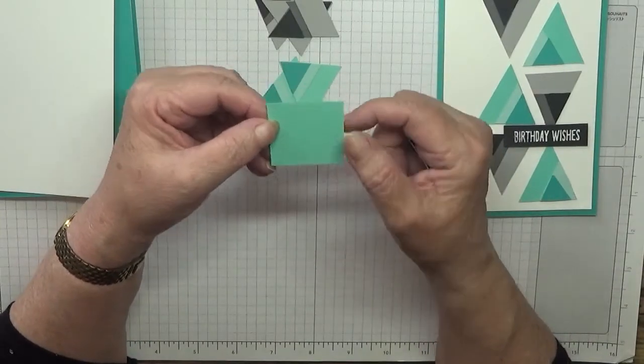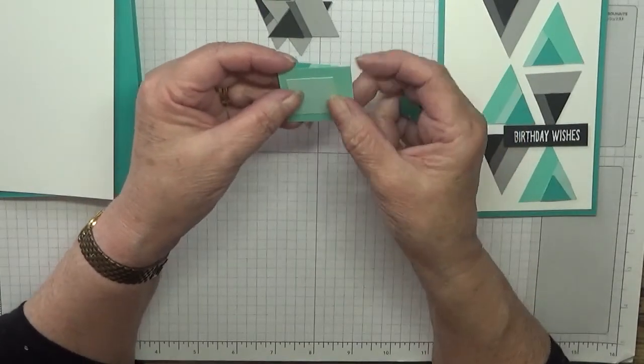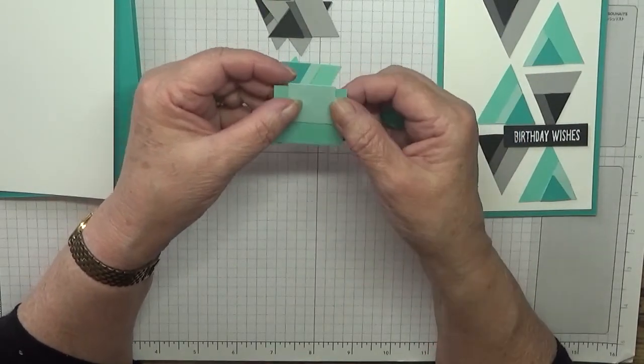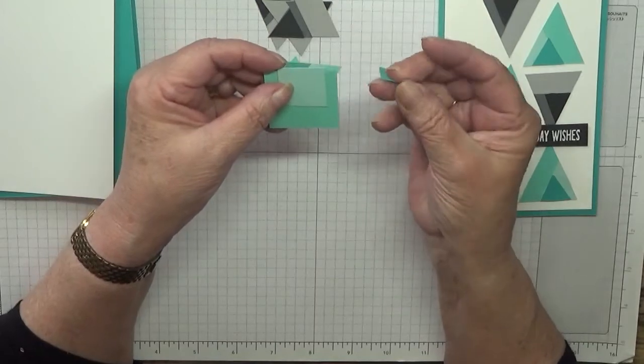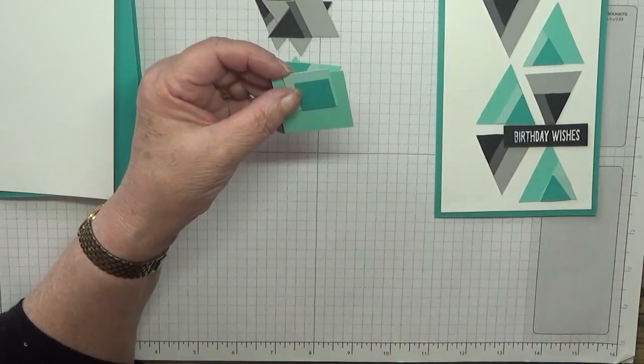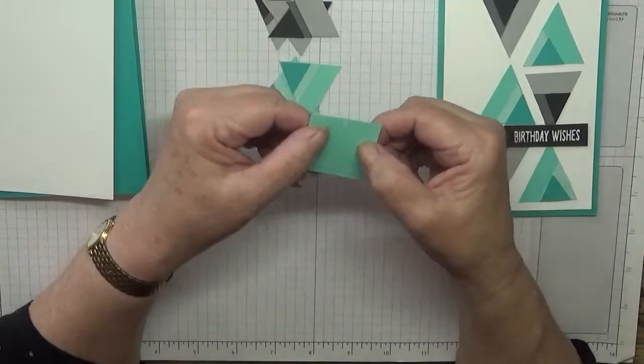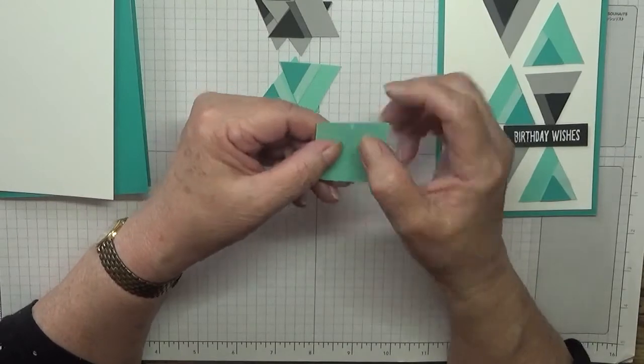To make these triangles I've got a square at one and a half inch square, a square at an inch so it's one by one, and a square at three quarters of an inch. Now I did measure up, we've got a mark on these ones.